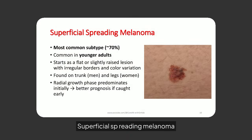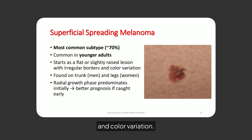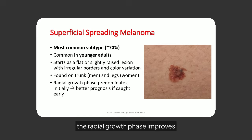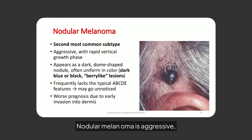Superficial spreading melanoma is the most common subtype, often found in younger adults. It starts as a flat lesion with irregular borders and color variation. Early detection during the radial growth phase improves prognosis significantly.